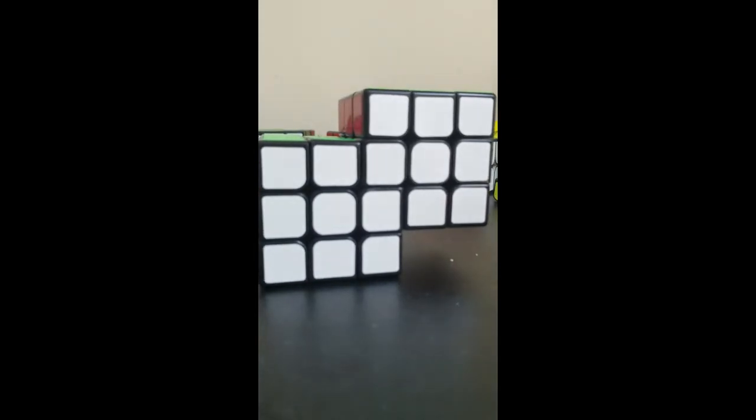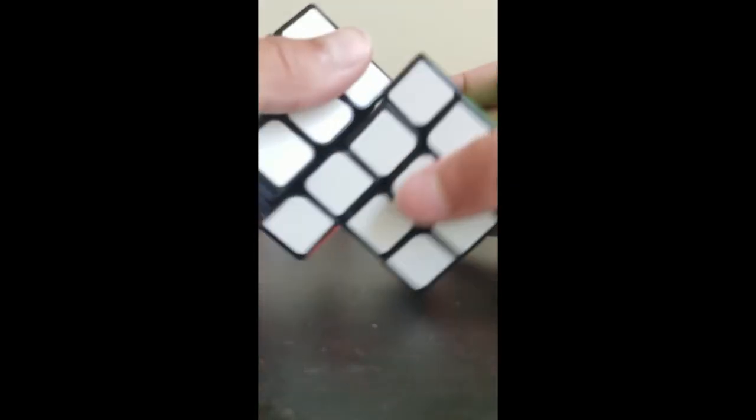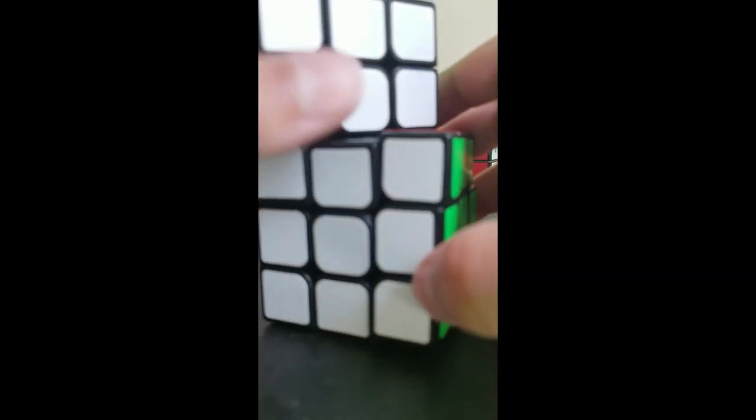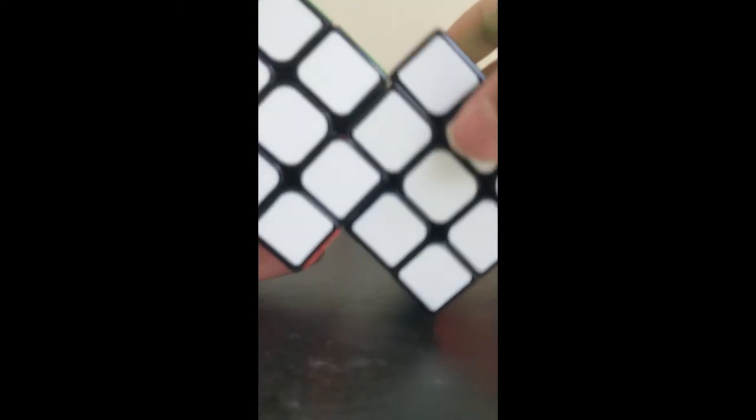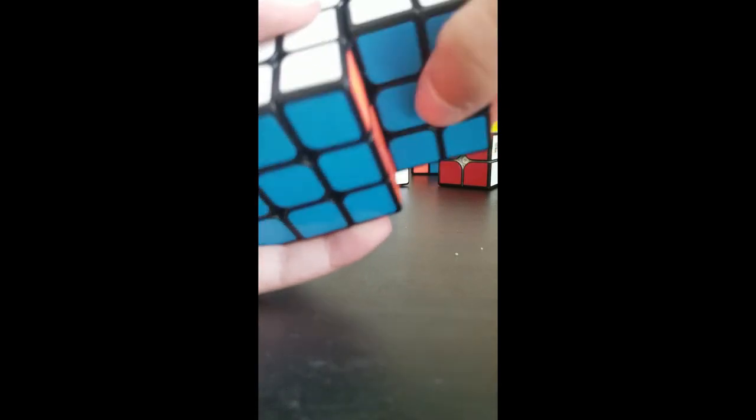After you do all the steps, you should have a pretty good Siamese cube. Just make sure don't do the mistake like I did before. For the layers that you unstickered, do not put super glue on them. I just realized that you want the wide moves to turn. So yeah, anyway, that's about it.